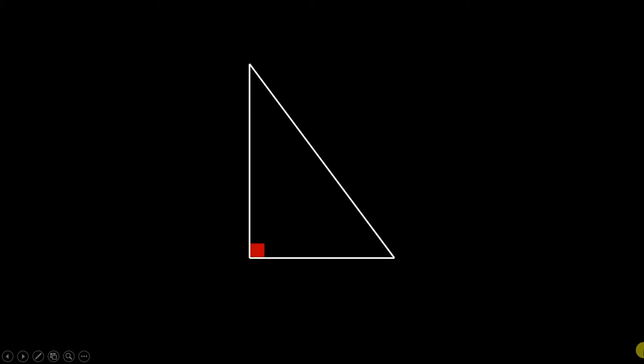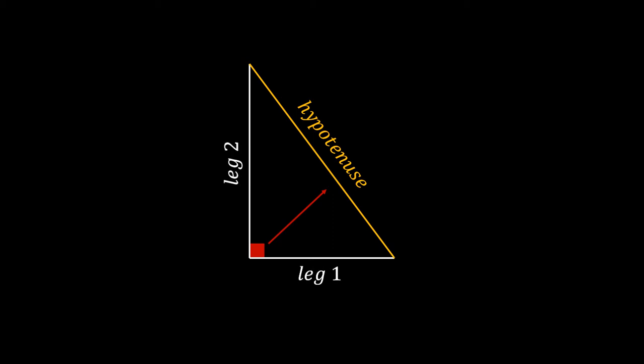Here we have our right triangle and its longest side is known as the hypotenuse. The hypotenuse is also the opposite side of the 90-degree angle, and there are two other legs of the right triangle.